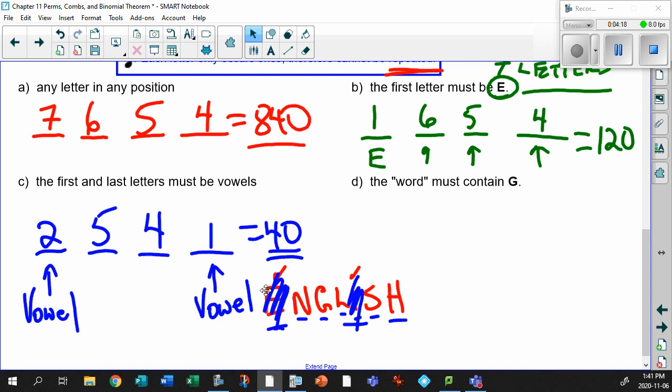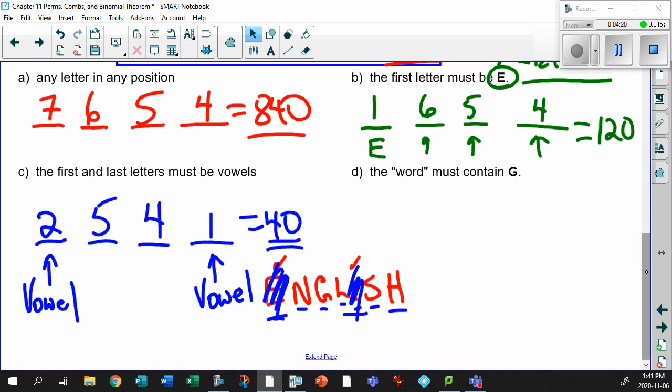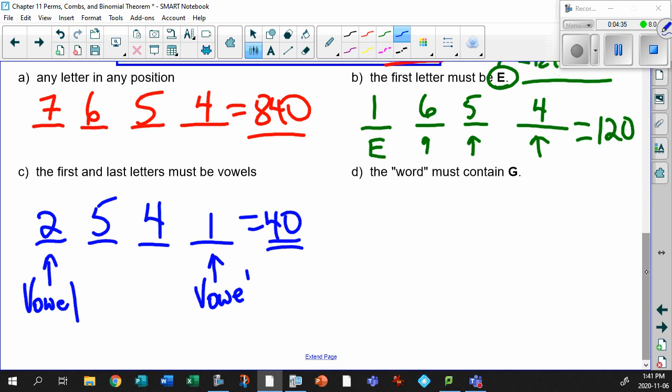This one becomes even more curious. Look at this one. It's one of my favorites. It says the word must contain the letter G. Okay. Well, my question is this then. Where does the G go? Well, if you think about it, you have four choices. One, two, three, four. The G could be in the first position.